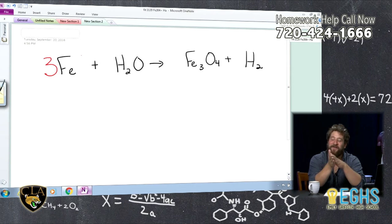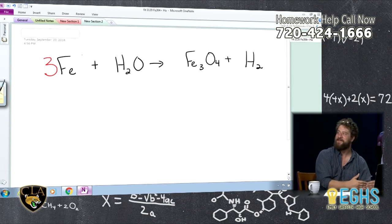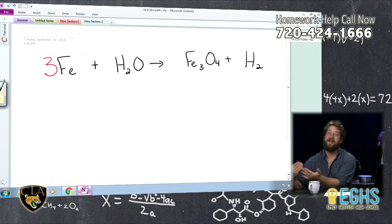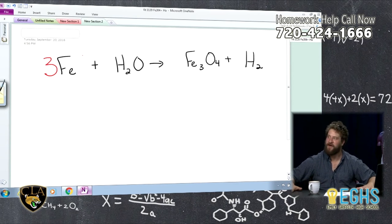So again, we've got one iron on the left originally, but we just put a three in front of it. So now we have three iron molecules on the left, which corresponds to on the other side, we've got Fe3, three iron molecules right there. So we're even in terms of iron.